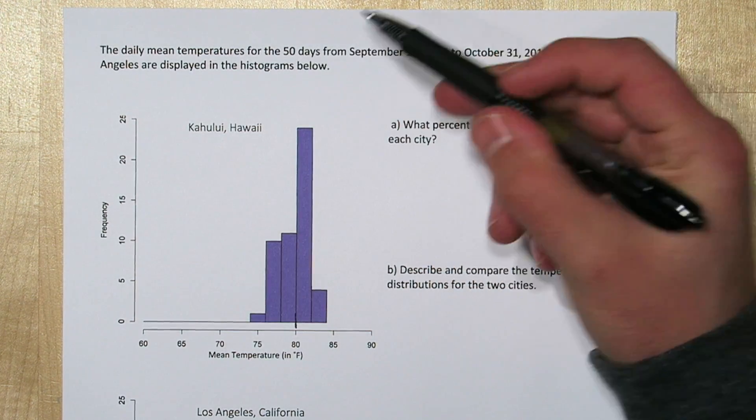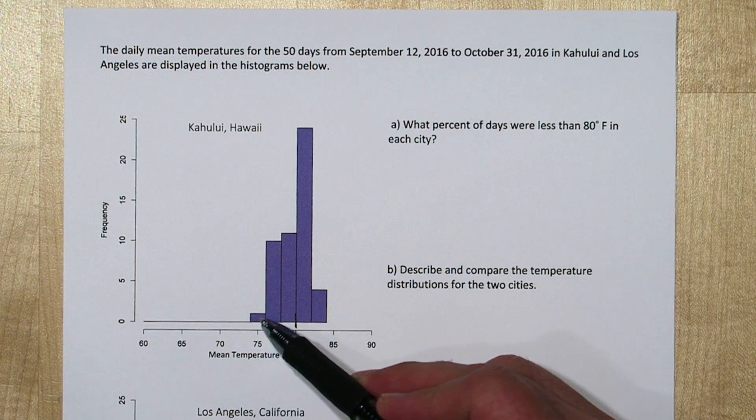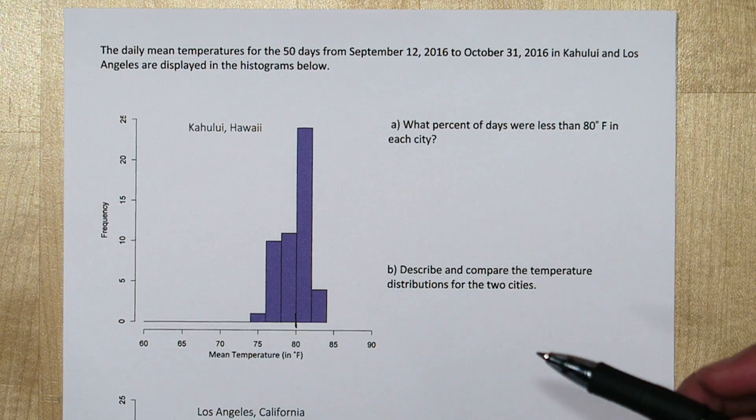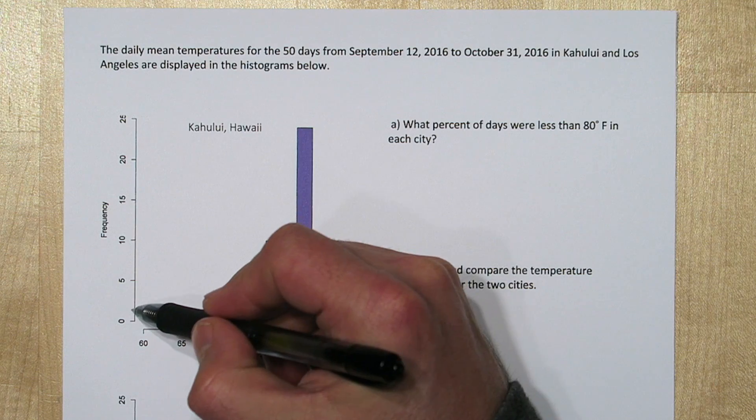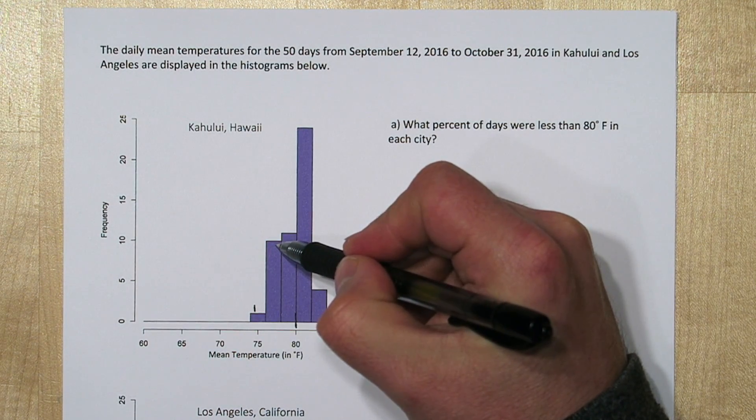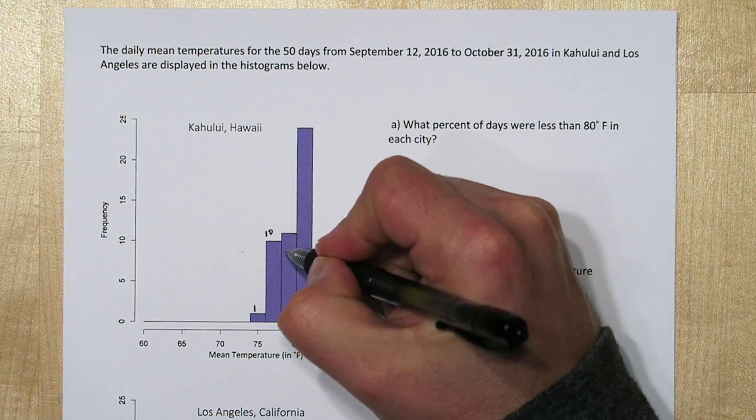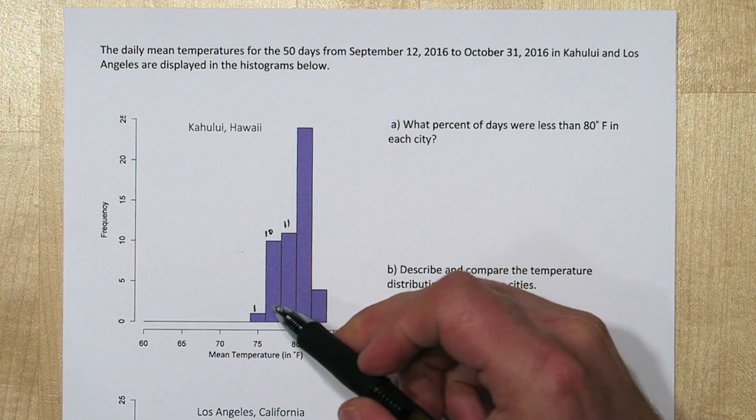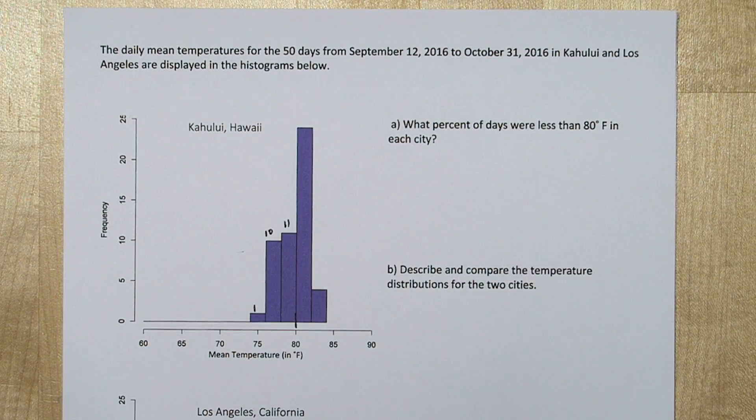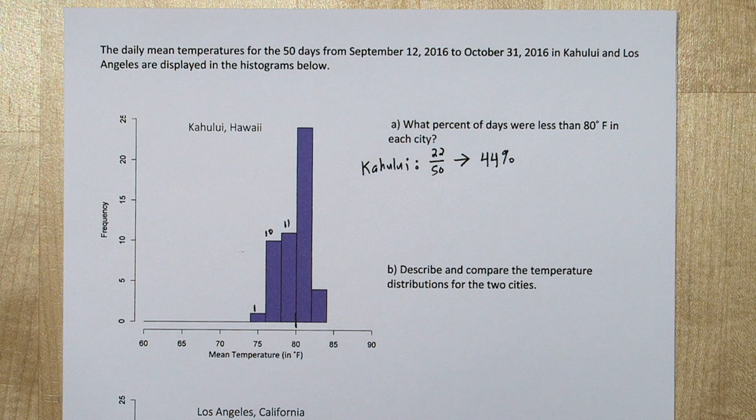There's 50 days total and we have a frequency axis right here. We need to add up this bar, this bar, and this bar. This one right here lines up with looks like 1. This one here lines right up with the 10, and this looks like 1 unit above that 10, so 11. So 44% of the days in Kahului had mean temperatures of less than 80 degrees.